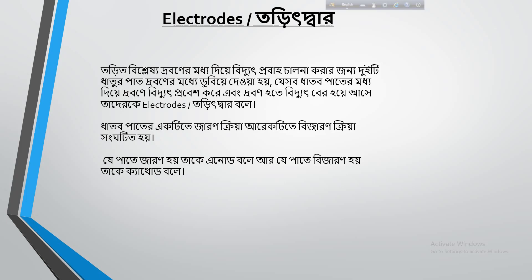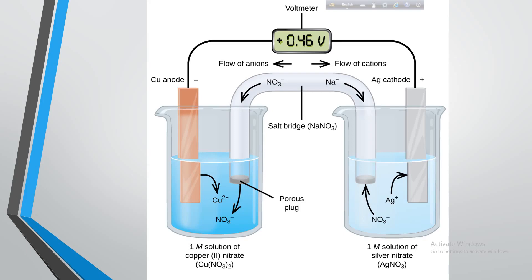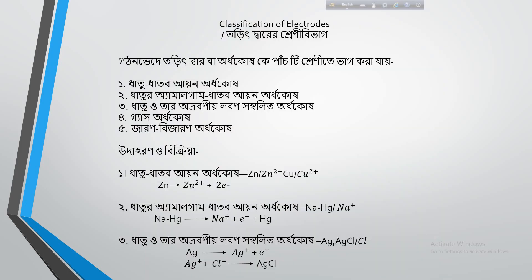Let us look at a diagram here. We can see a picture. First, regarding classification: conductors or half-cells can be divided into classes based on their composition and type. We will now learn about the classification of electrodes into different categories.